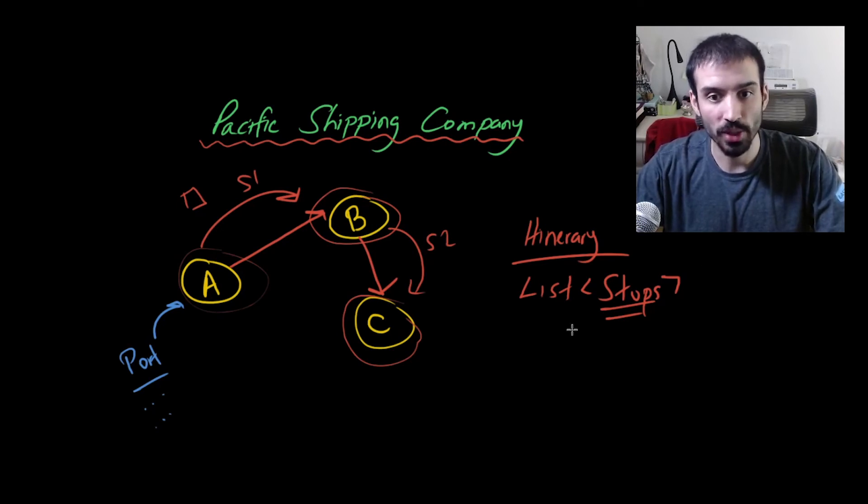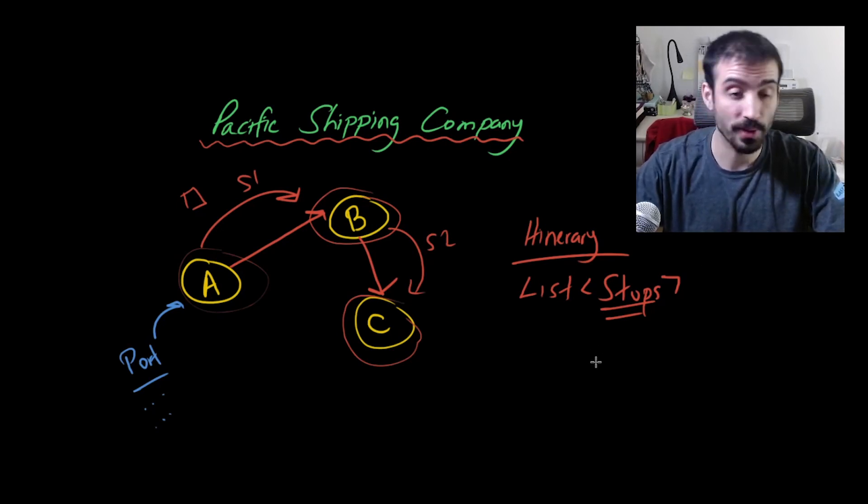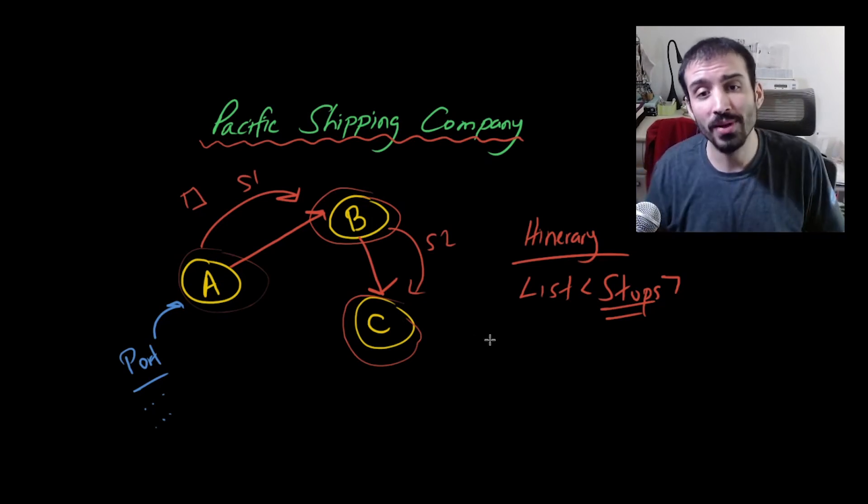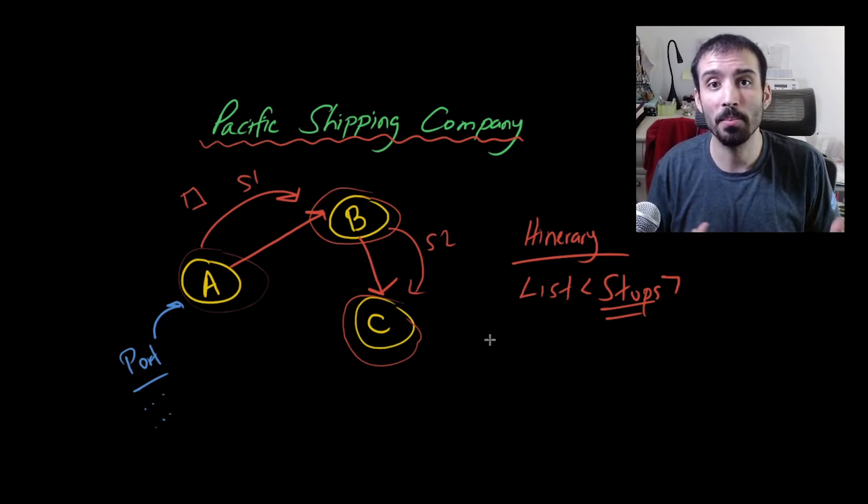So this is business logic here. We are creating a representation of our model through kind of this encoding. Now, what if we come along and say business wants to apply some kind of policy that says, whenever you construct an itinerary, no matter where the vessel goes, it always needs to come back home?